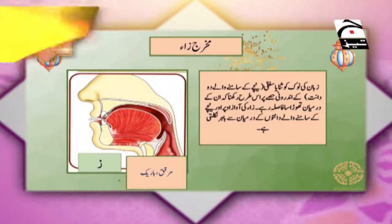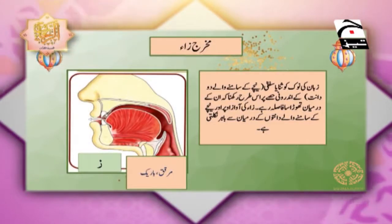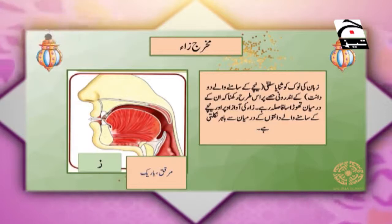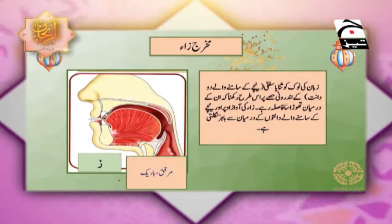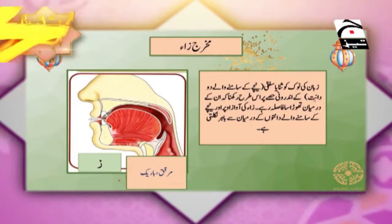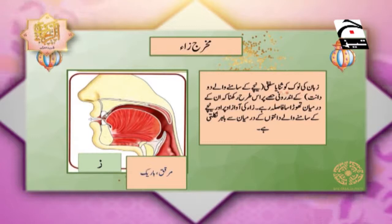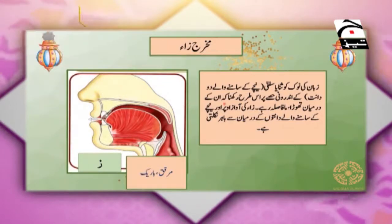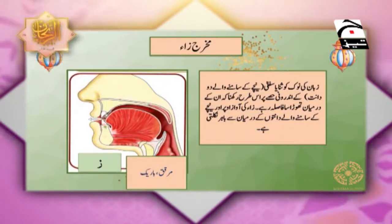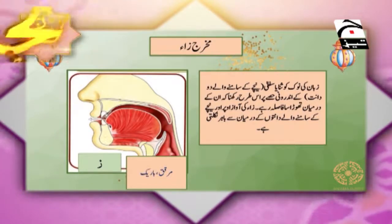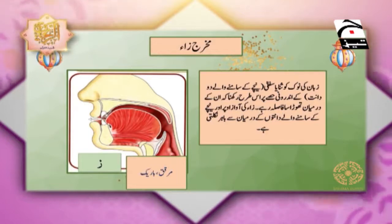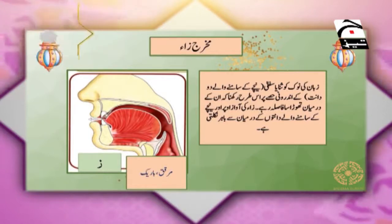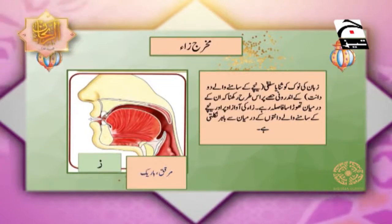سین اور زا ان دونوں کی quality ملتی ہے اور وہ ہے whistle یعنی سیٹی کی آواز۔ مخرج زا: زبان کی نوک کو اسنان سفلیٰ یعنی نیچے کے سامنے والے دو دانتوں کے اندرونی حصے پر اس طرح رکھنا کہ ان کے درمیان تھوڑا سا فاصلہ رہ جائے۔ زا کی آواز اوپر اور نیچے کے سامنے والے دانتوں کے درمیان سے باہر نکلتی ہے۔